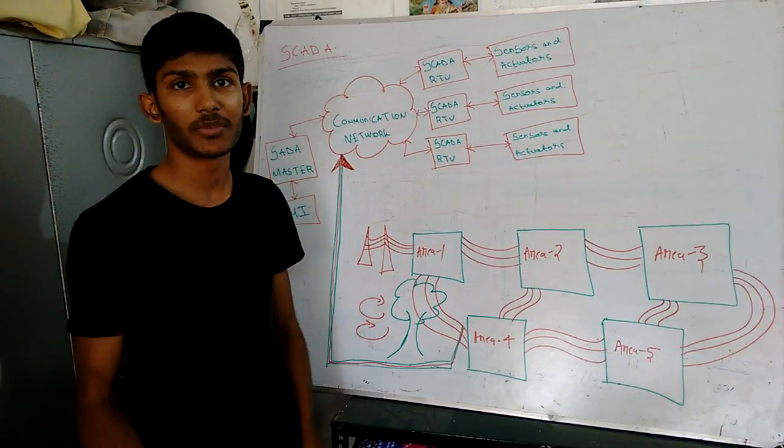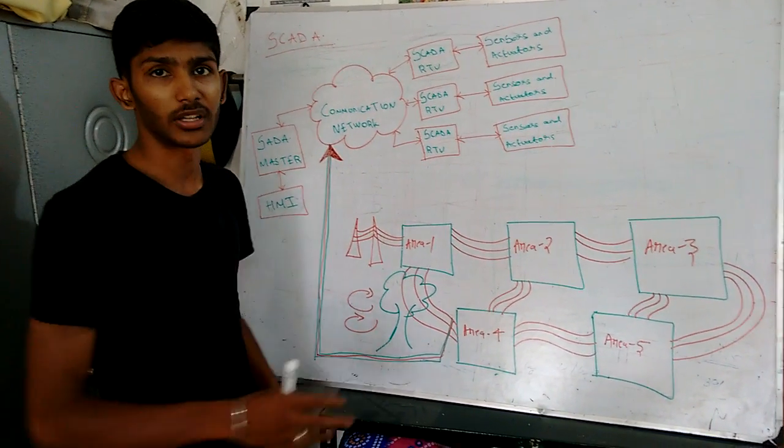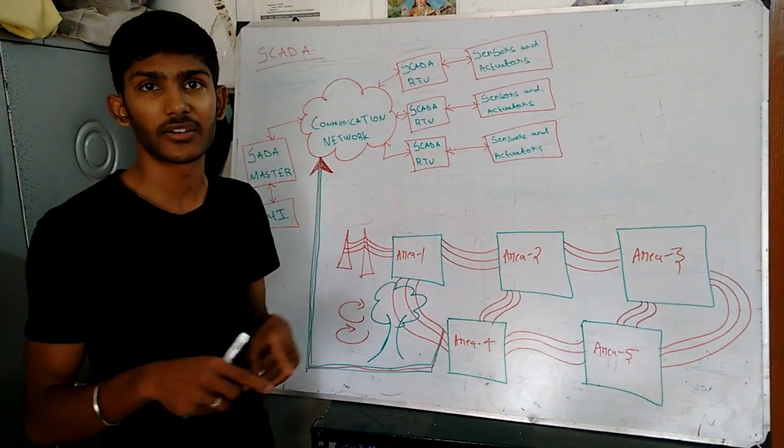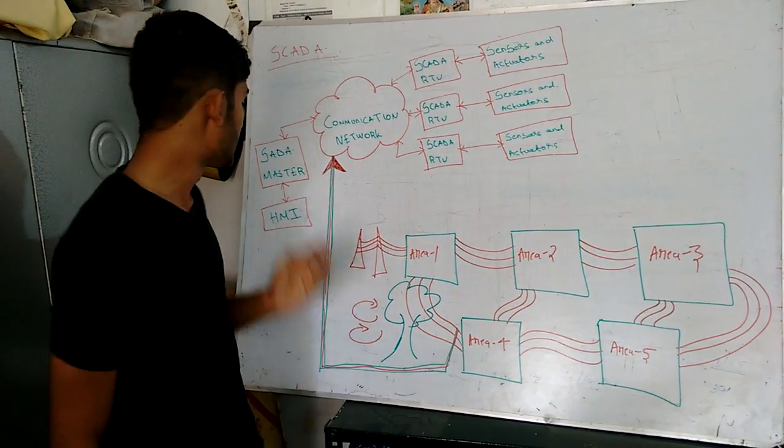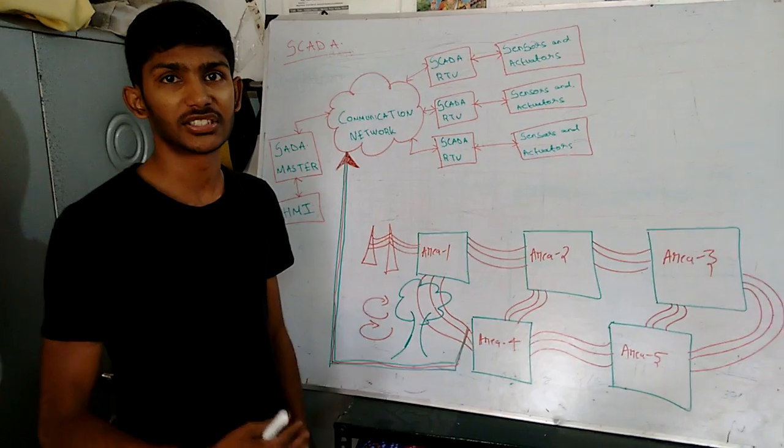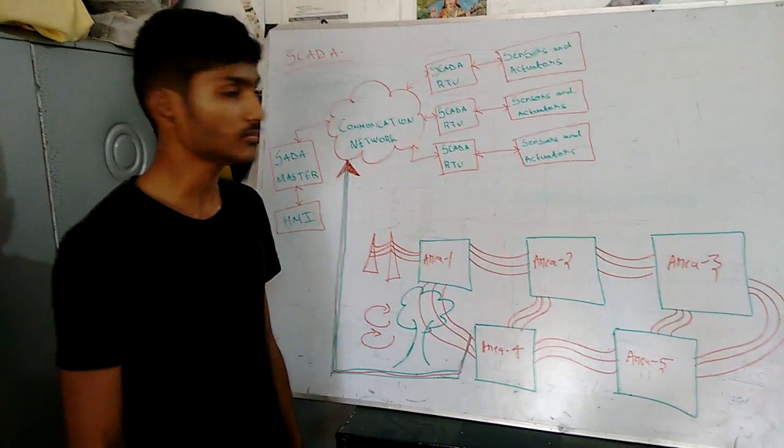HMI stands for Human Machine Interface. It is used for interfacing humans to machines. We can see displays in all electronic devices. This is the interfacing system between us and the device.